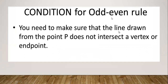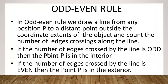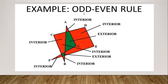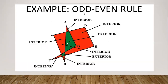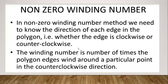The condition for the odd-even rule is that the line drawn from point P must not intersect a vertex or any endpoint. Whenever you draw the imaginary line from any point P, it should not coincide with a vertex or any endpoint. Keeping this in mind, we draw our imaginary lines and identify the interior and exterior regions of the polygon.